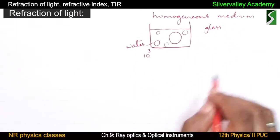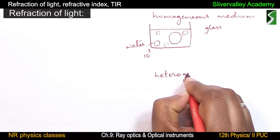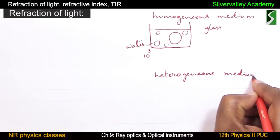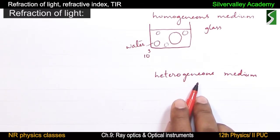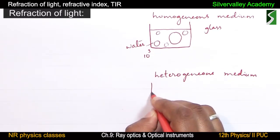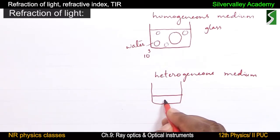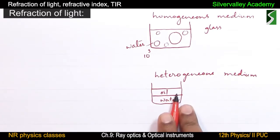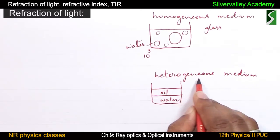The opposite of homogeneous is heterogeneous. In a heterogeneous medium, density is different from region to region. For example, a container with water and oil — oil floats on water — and this system is heterogeneous.